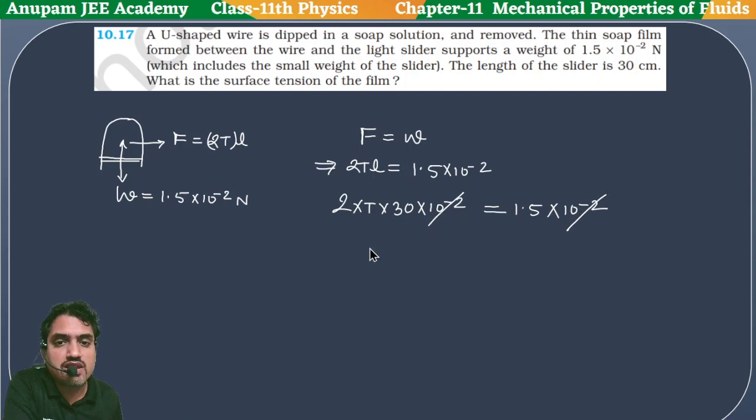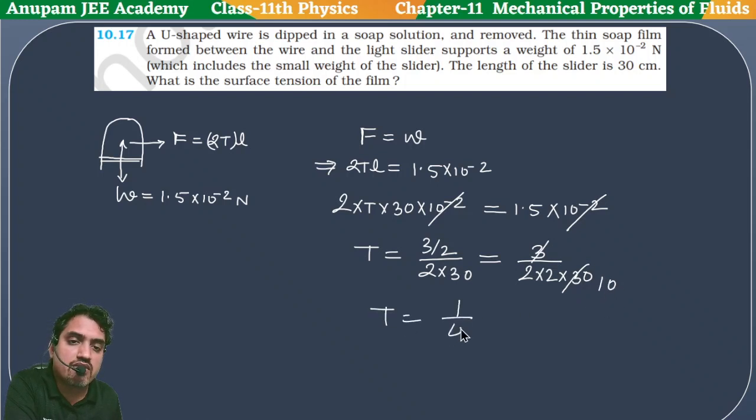We cancel 10^-2 with 10^-2. We get T = 3/2 divided by 2 × 30. We can write this as 3 divided by 2 × 2 × 30. The 10 cancels here.